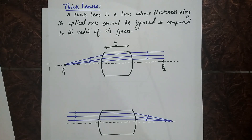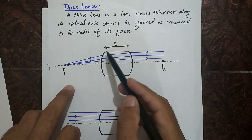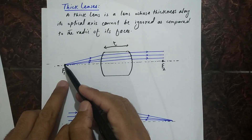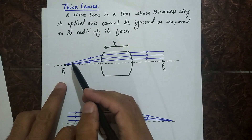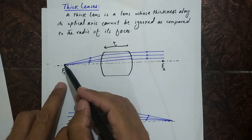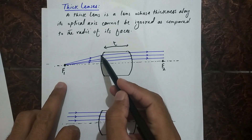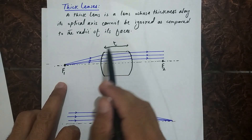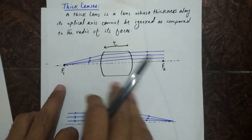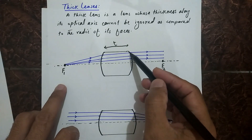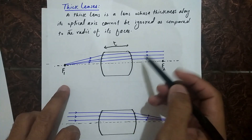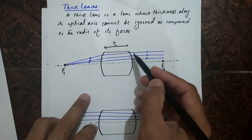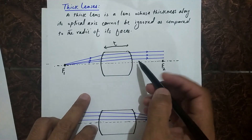Now we are going to define different terms related to thick lenses. The first is the principal plane. Consider a thick lens — this is its front focal point, and a point object is placed here. Rays of light come towards the thick lens, and at the first boundary refraction occurs, bending the rays toward the normal. A second refraction also occurs at the back boundary of the lens.